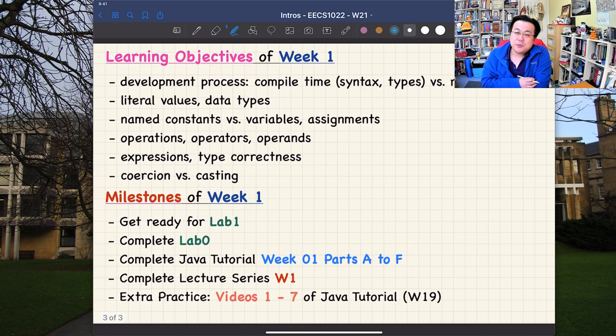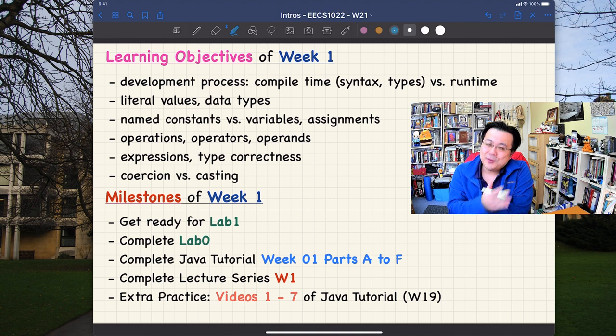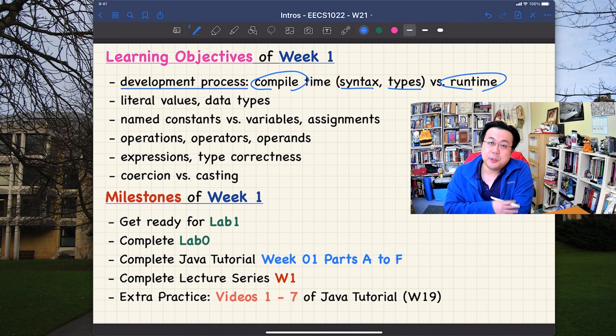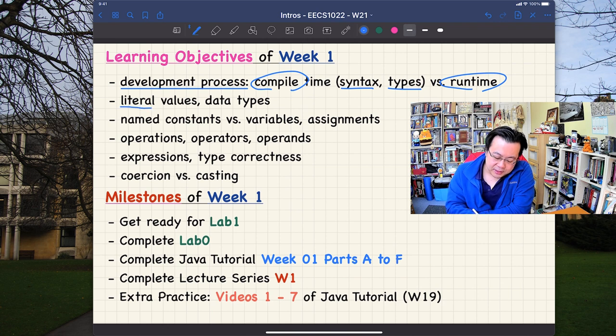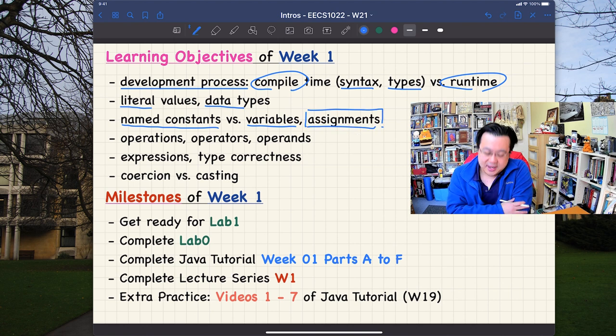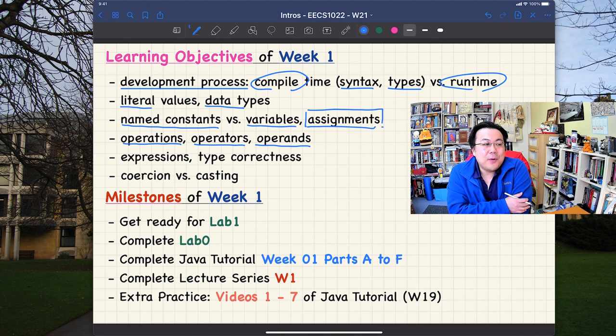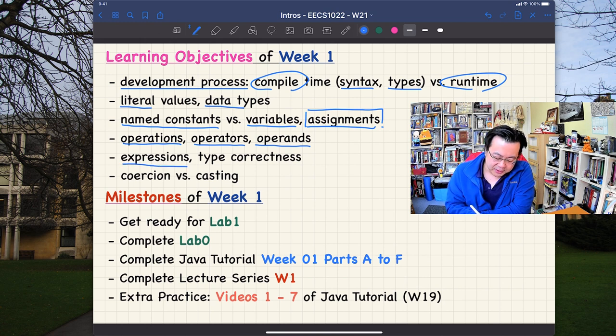All right. Let me go over the learning objectives for week number one very quickly and also the milestone and then I'll leave you to do the work. All right. So let's see this. We got, we need to talk about development process for your Java programming. So we're going to talk about compile time versus runtime and also syntax versus types. You will see exactly how these terms should be developed. And also I got lots of examples for you. We're going to talk about literal values and data types. Okay. And then we're going to talk about name constants and also variables and how we can do variable assignments to manipulate the storage of values. You will see that. And then we're going to talk about operations, operators, and operands. So these are very relevant terms, but they have, they do have some subtle difference you have to watch out for. Okay.